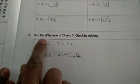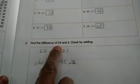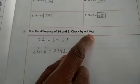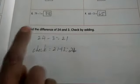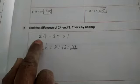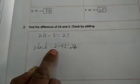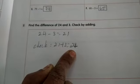Second bit is find the difference of 24 and 3. Check by adding. In S1 also we have done children. In S2 also we have given. 24 minus 3 is 21. Check. 21 plus 3 is 24.